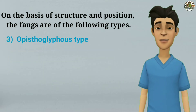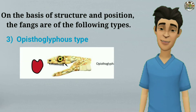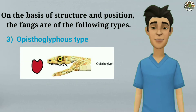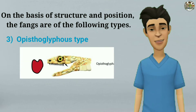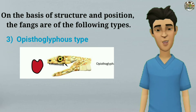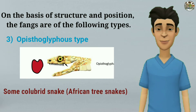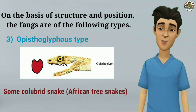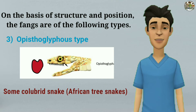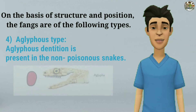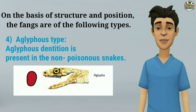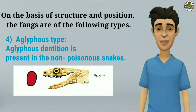Apistoglyphs type: the fangs are small and lie at the back portion of the maxillae. The fang has a groove along its posterior face. Examples include some colubrid snakes and African tree snakes. Agolyphs type: agolyphs dentition is present in non-poisonous snakes.